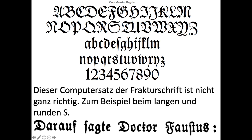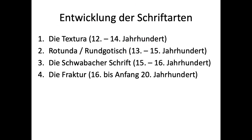When they were actually printing these texts, they had two separate compartments in the font drawer for the two different S's — one for the long S and one for the round S. Now let's look at the development of the fonts: Entwicklung der Schriftarten.